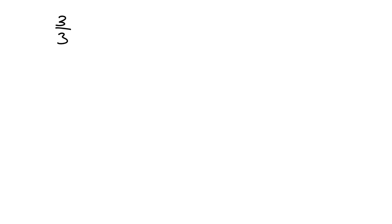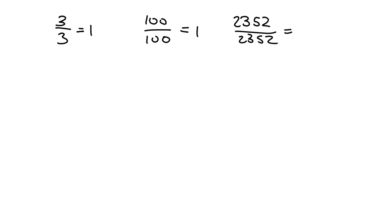This rule for division leads us to another rule. But before we get to that, we're just going to make sure we all know one important fact about division. If I ask you what's 3 divided by 3, or 100 divided by 100, or 2352 divided by 2352, hopefully you immediately know that each of those will just be equal to 1. So if all of those are equal to 1, what will 3 to the power of 5 over 3 to the power of 5 be equal to? Well, it has to be equal to 1.